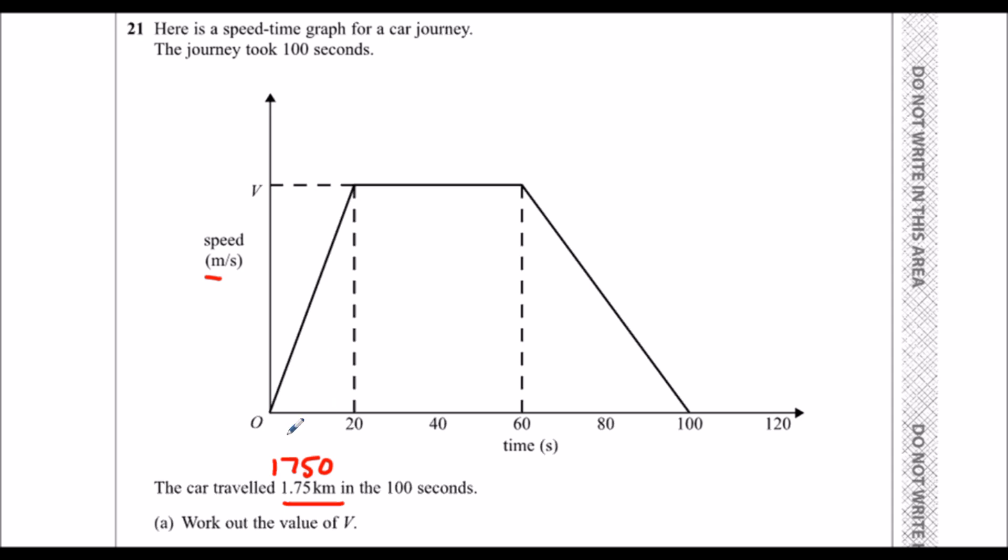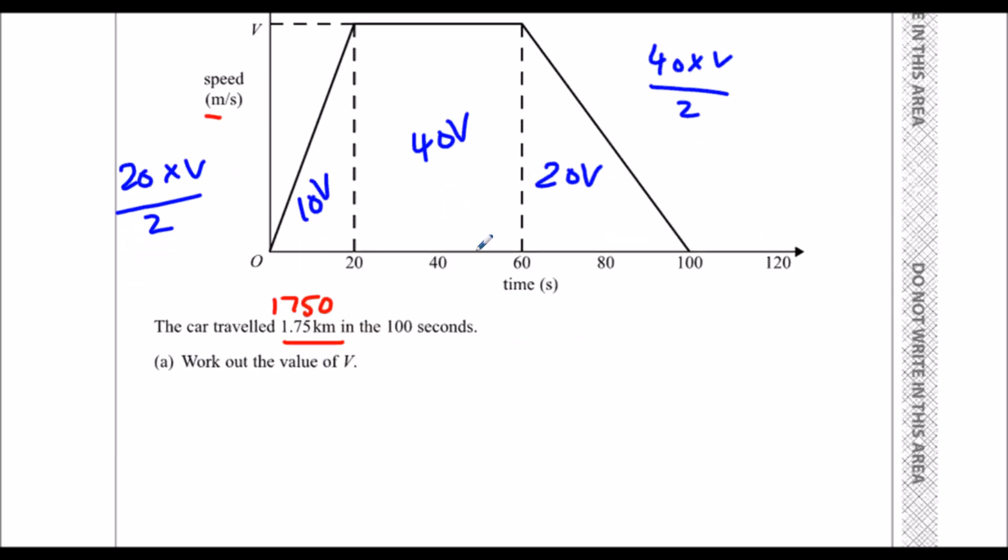So 20 times v is 20v, and 40 times v divided by 2, so half base times height for a triangle is 20v. So the total area is 70v.